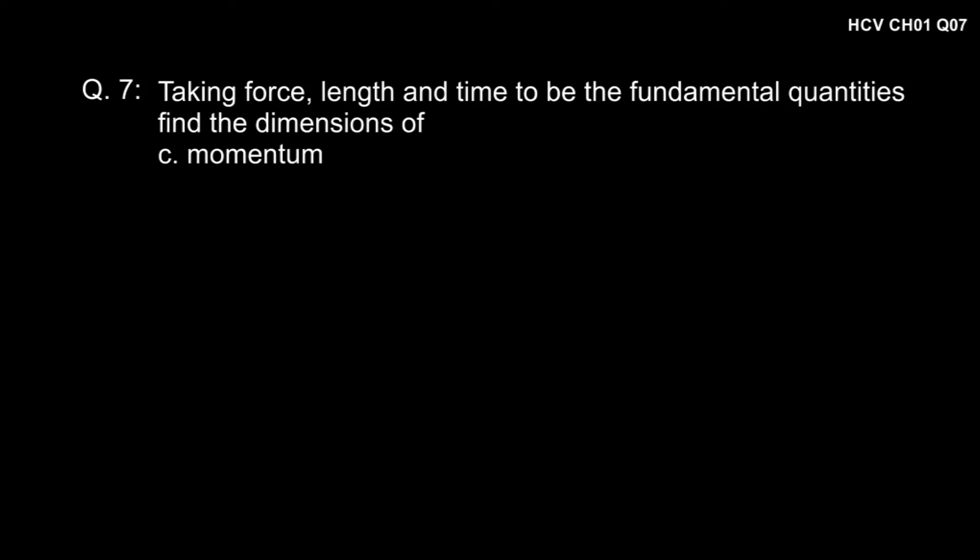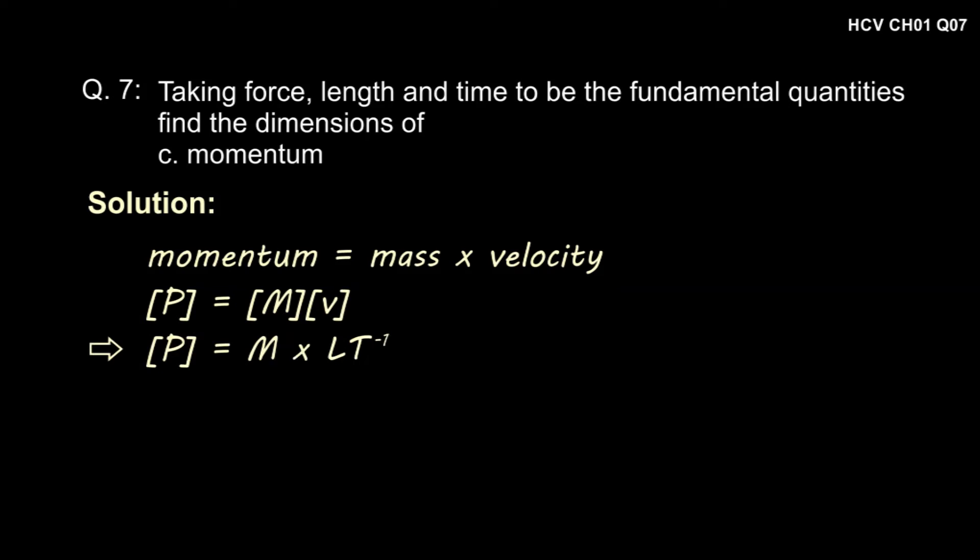In part C, we have to find the dimension of momentum. Momentum is given by mass into velocity. Thus, dimension of momentum is dimension of mass into dimension of velocity. Dimension of momentum thus is MLT to the power minus 1.